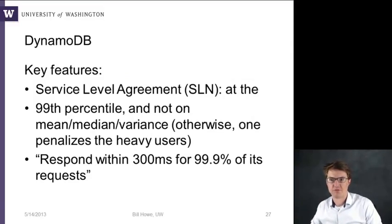So what are some of the tricks it led to? Some key features are that in terms of DynamoDB, which is the implementation you can now go and use and pay for, one of the neat things is that it offers a service level agreement on performance. At the 99th percentile, they promise to respond within 300 milliseconds for 99.9% of its requests. And the reason they do this on the 99th percentile, as opposed to some sort of notion of the average, the mean or the median, is that that would artificially penalize the people who are using it heavily. They would get a disproportionate number of failed requests. It'd be easy to satisfy the average by only focusing on the lightweight users.